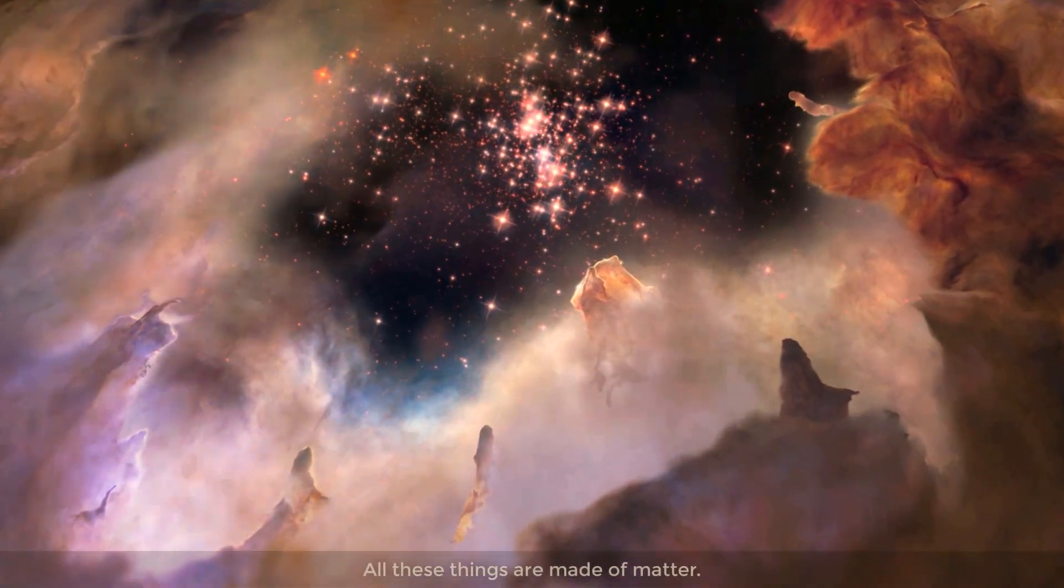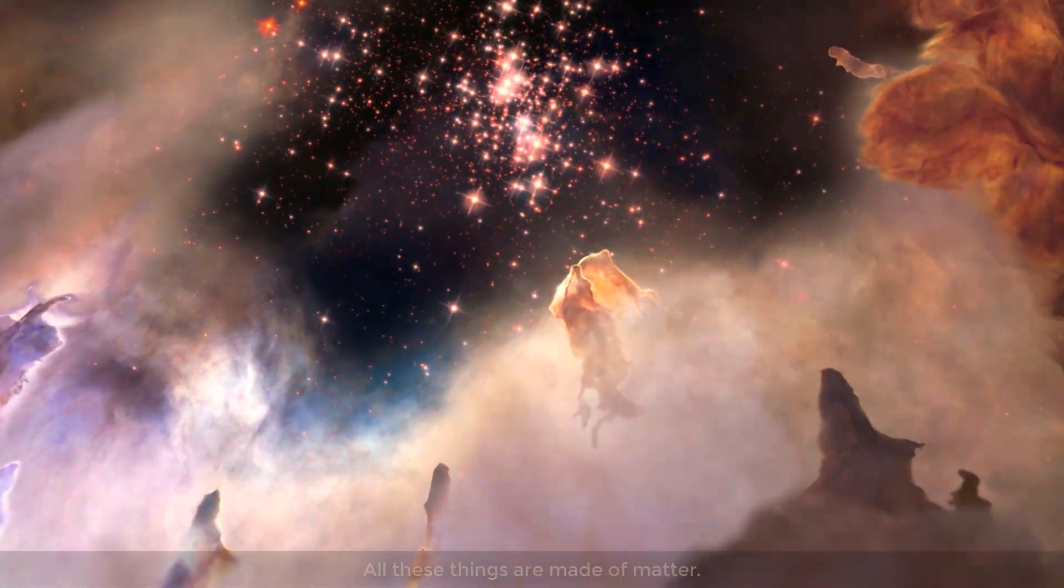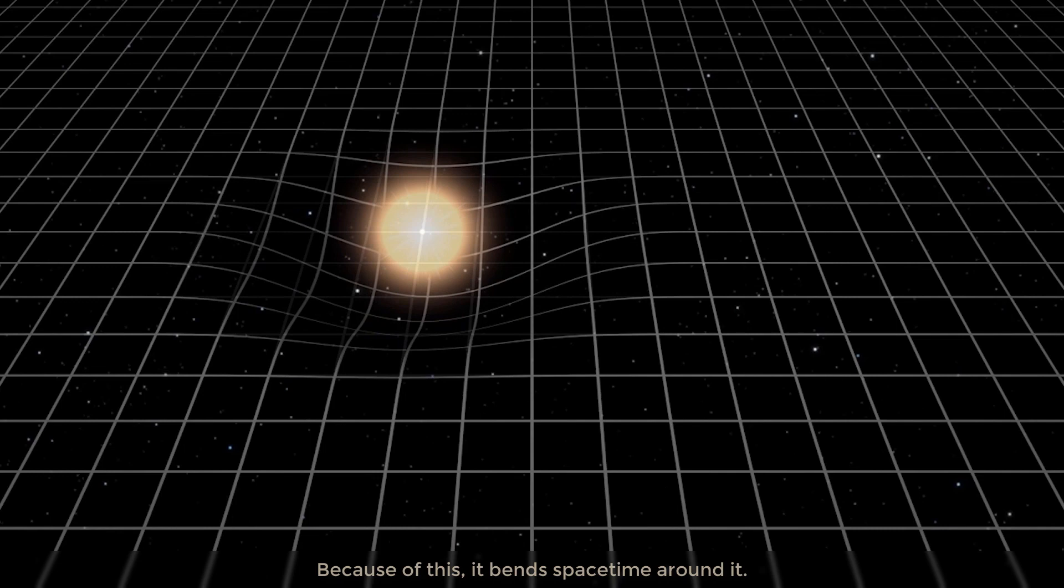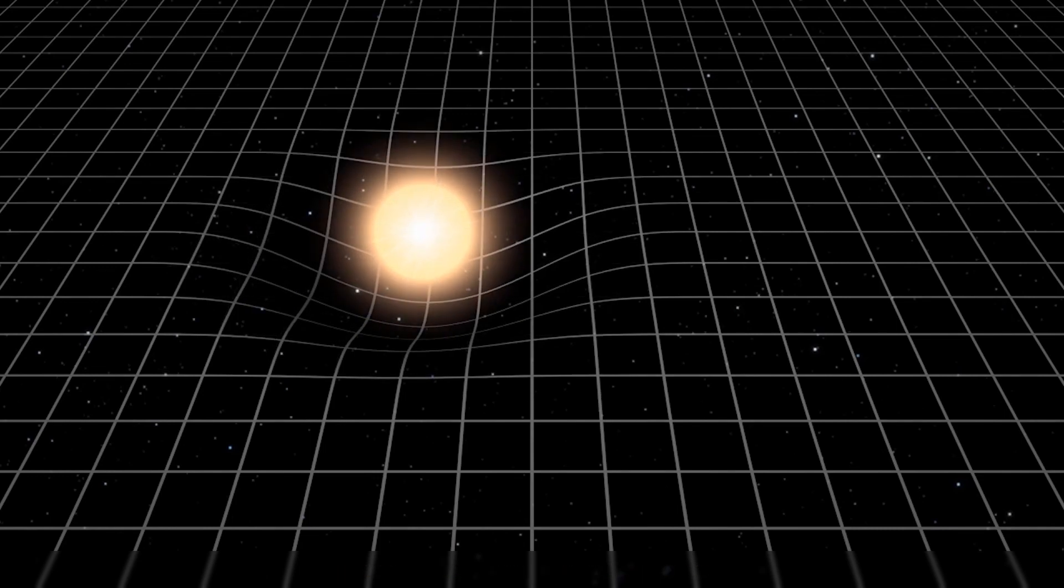All these things are made of matter, and matter has mass. Because of this, it bends space-time around it, and anything that passes by will slide along the curvature of space-time. We call this gravity.